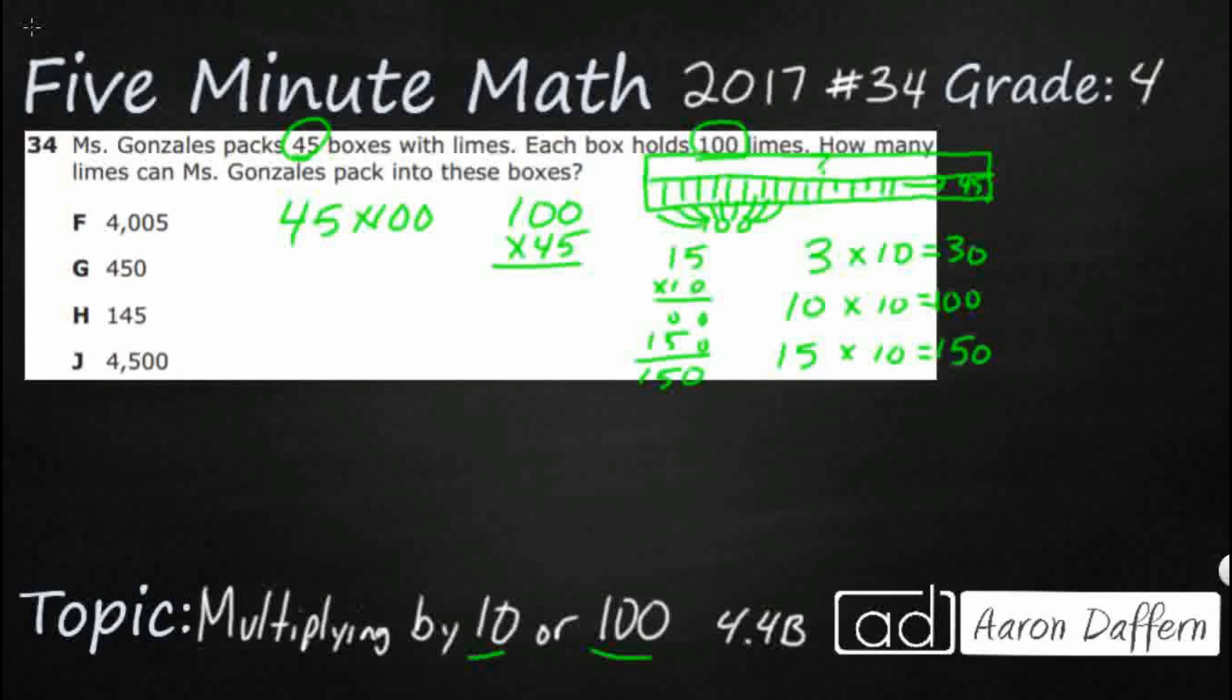And so hopefully we're noticing this pattern here of when we multiply anything by 10, what you do is you take your first factor and you simply add a zero because that zero comes from the 10. So 3 times 10 is 3 with a 10. 10 times 10 is 10 with a 10, or 100. 15 times 10 is 15 with that extra zero, that extra tens place. So what we have here is we've got the first factor and then you simply add a zero.